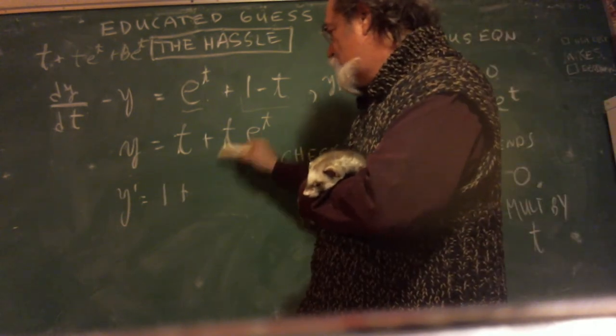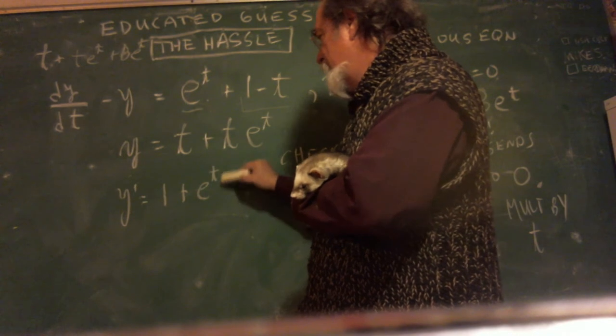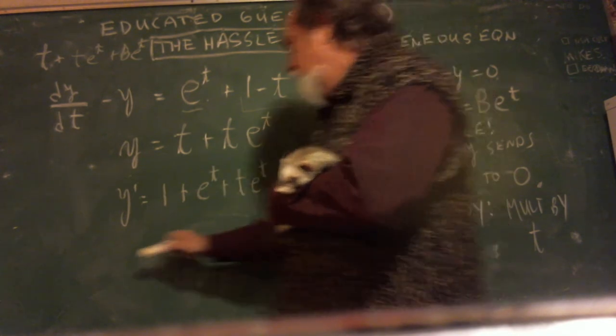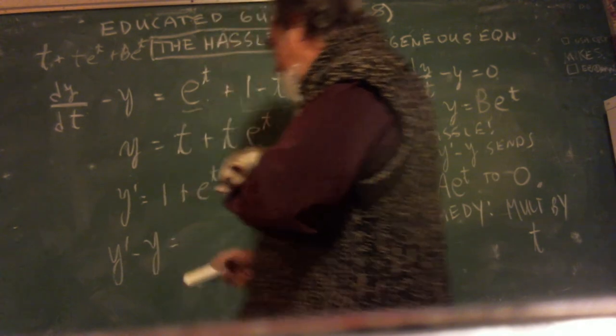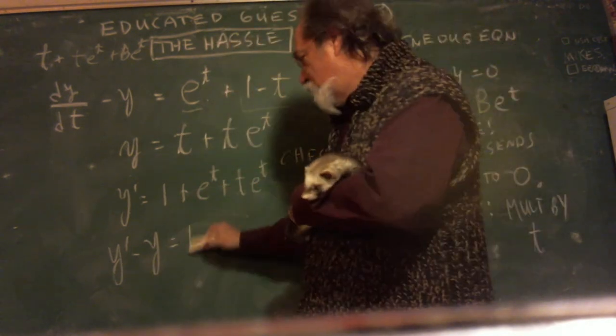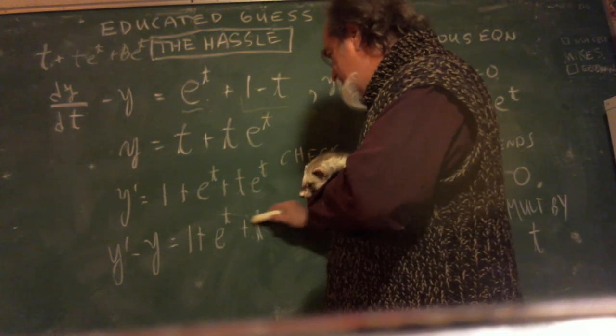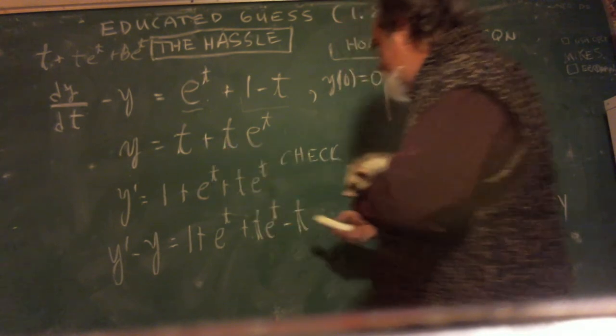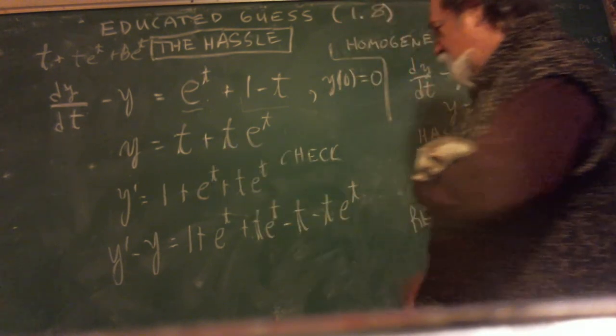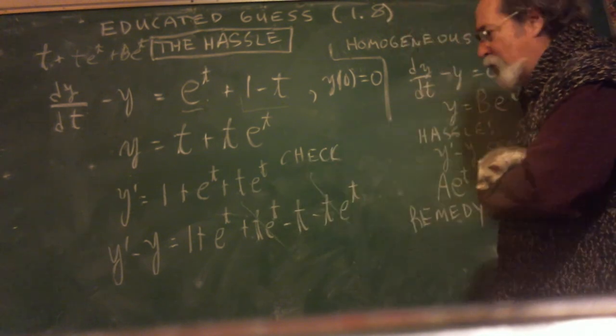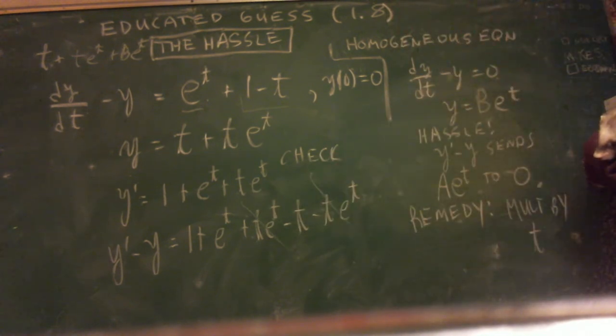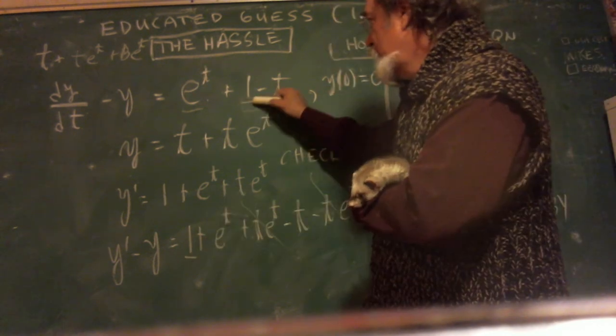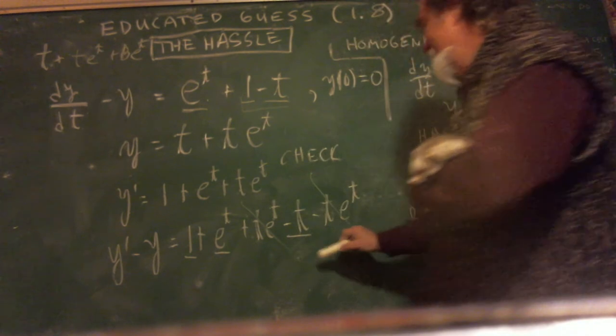One plus, now the derivative of t is one. So that's e^t plus t·e^t. And when I do y prime minus y, I get, let's see, I'll write it all out this time. One plus e^t plus t·e^t minus t minus t·e^t. Okay. The t·e^t's cancel. I believe I get a one. I get a one. Check. I get a minus t. Check. And I get an e^t. Check. Perfect.